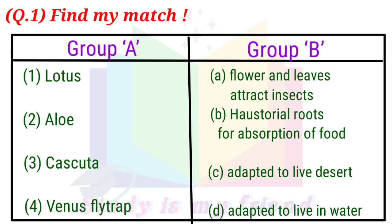Group B continued: B. Haustorial roots for absorption of food. C. Adapted to live in desert. D. Adapted to live in water.